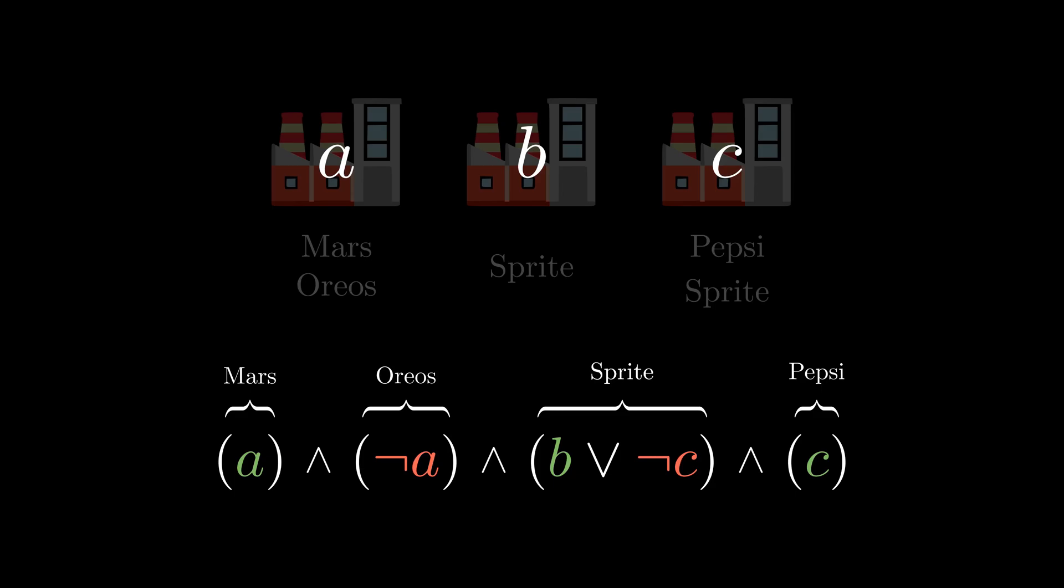As you can see, a product is produced if and only if at least one of its factories are producing it. In this simple example, the problem doesn't have a solution, because a single factory produces two unique products.